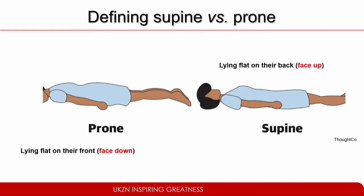To define supine and prone positions: prone position refers to a person lying flat on their front, which means the face is facing down. Lying flat on their back, facing up, is the supine position.